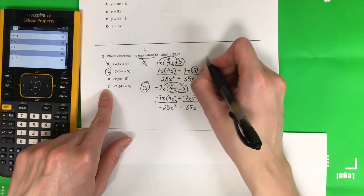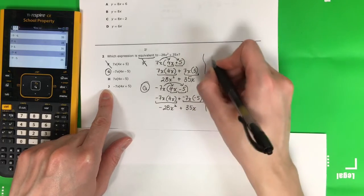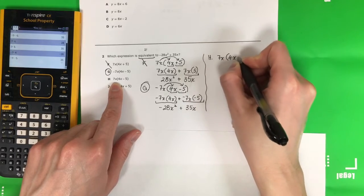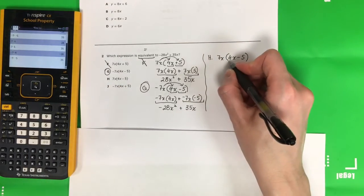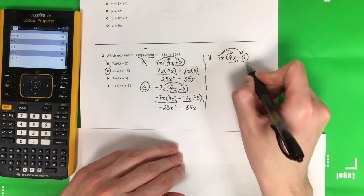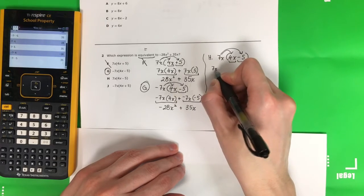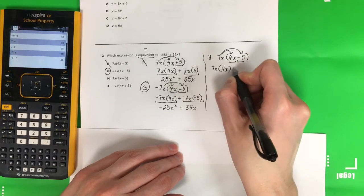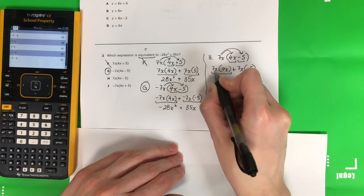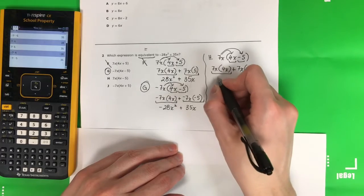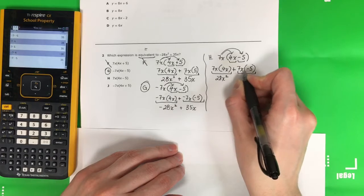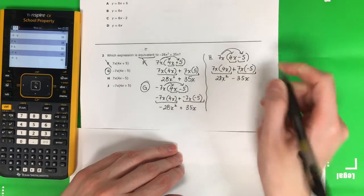Let's do h and j just for extra practice. h is 7x times 4x minus 5. I have two terms inside: 7x times 4x and then 7x times negative 5. So 7x times 4x plus 7x times negative 5. 7 times 4 is 28x squared, and 7 times negative 5 is negative 35x.